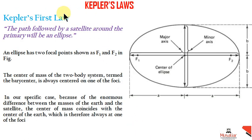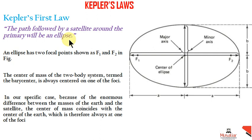Kepler's first law: the basic statement is that the path followed by a satellite around the primary will be an ellipse. So the primary satellite rotates along an elliptical path. That is the basic statement of Kepler's first law.